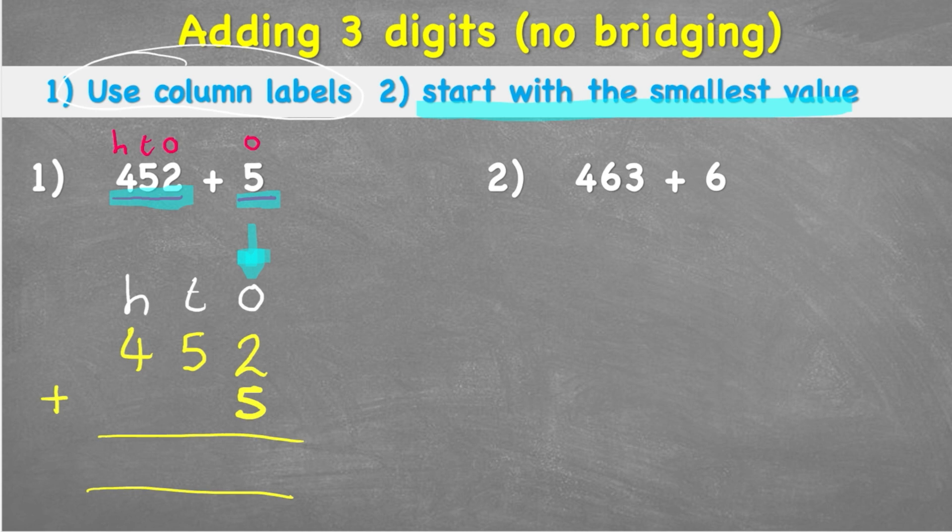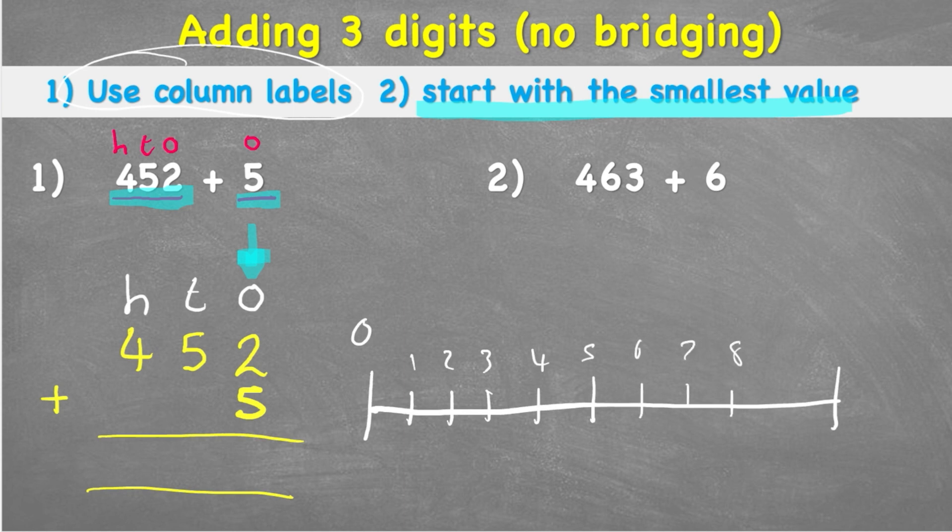Now if I don't know how to do that, I can use my number line. So I'm going to set up a number line just here. And I'm going to put 0 on this side. 1, 2, 3, 4, 5, 6, 7, 8, 9, and 10.